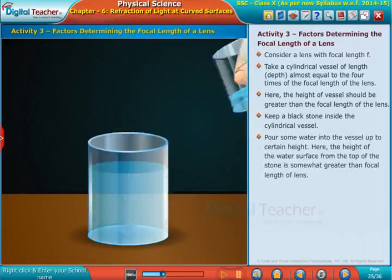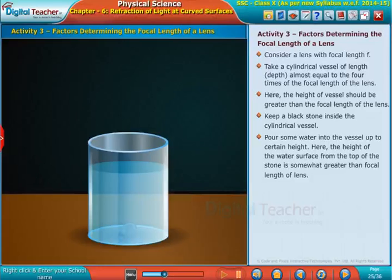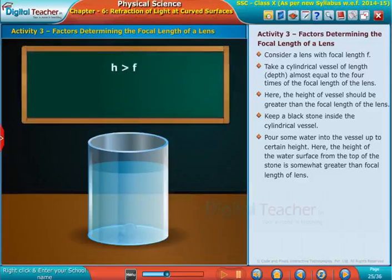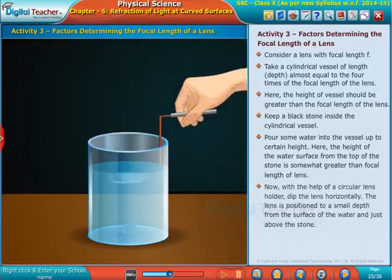Here, the height of the water surface from the top of the stone is somewhat greater than the focal length of the lens. Now with the help of a circular lens holder, dip the lens horizontally.